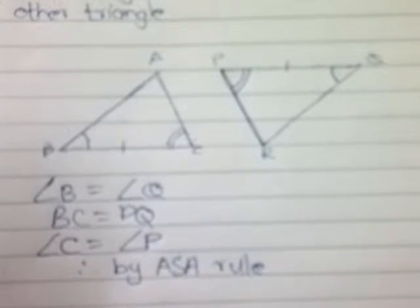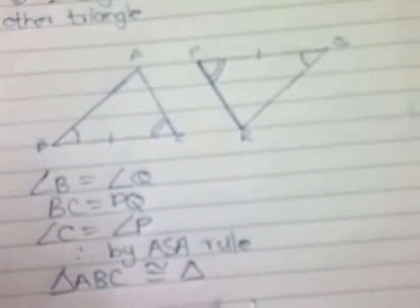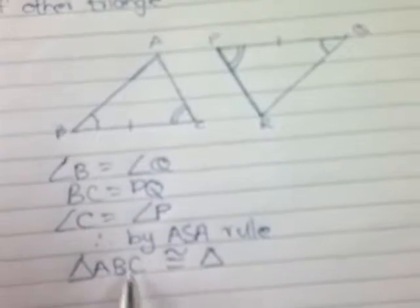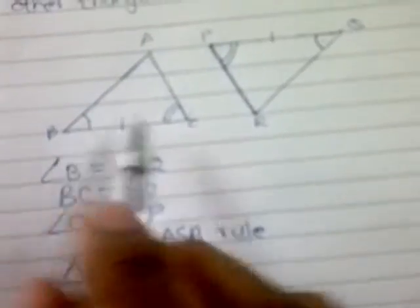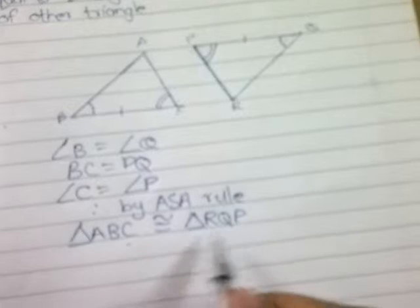You have to be very careful while solving questions. By the ASA rule, triangle ABC is congruent to — wait, check the corresponding vertices. Angle B corresponds to angle Q, so write Q in the middle. Angle C corresponds to angle P, so write P at the end. The only remaining point is R, so triangle ABC is congruent to triangle RQP.